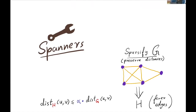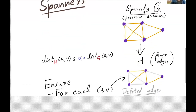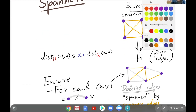Today I'm going to talk about spanners. Spanners are basically a way to sparsify a given graph G and generate a graph H that has fewer edges but approximately preserves all the distances in G. Specifically, we'll be talking about multiplicative spanners where all the distances are preserved up to a factor of alpha. This factor alpha is what is referred to as the stretch of the spanner.